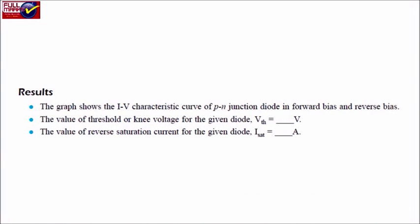The graph shows the IV characteristic curve of a PN junction diode in forward bias and reverse bias. The value of threshold or knee voltage for the given diode, VTH, is equal to [recorded value]. The value of reverse saturation current for the given diode, ISAT, is equal to [recorded value].